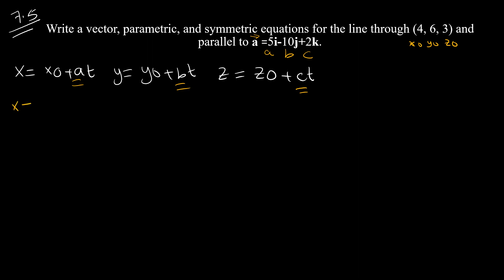The parametric equations are: x equals 4 plus 5T. For y, y0 is 6 and B is 10, so 6 plus negative 10T. For z, z0 is 3 and C is 2, so 3 plus 2T.